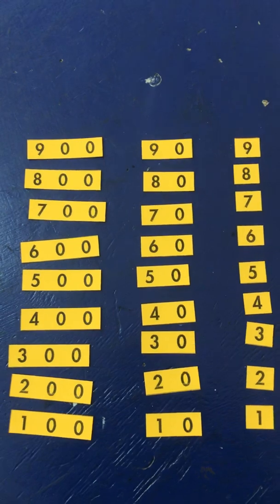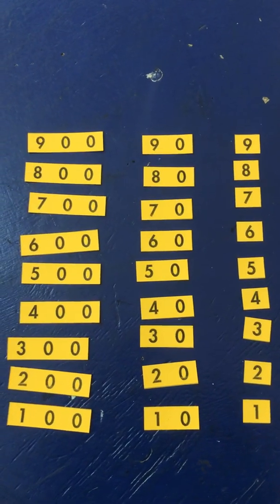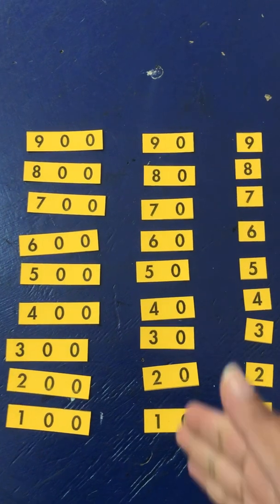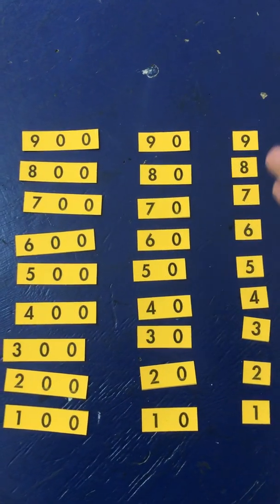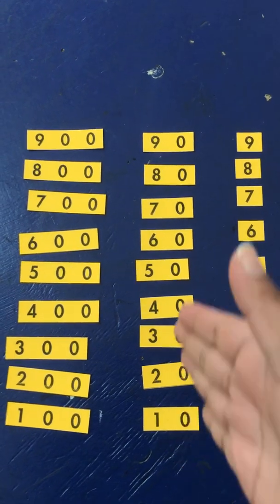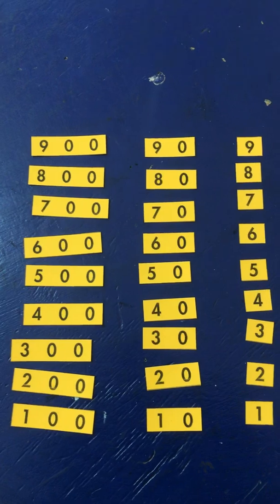You will have all your place cards laid out in towers, just like tall blocks of flats, with the ones on the right, the tens in the middle, and the hundreds on the left. It's very important that you learn how to do this.